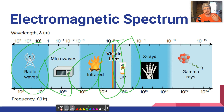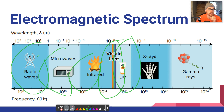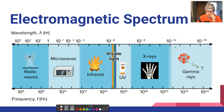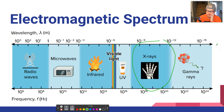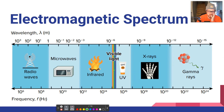After visible light, ultraviolet is at a frequency we can't pick up without manipulating things — like black lights, for instance. Then after UV you have X-rays in this range, and then finally gamma rays all the way at the end. That's the full electromagnetic spectrum.